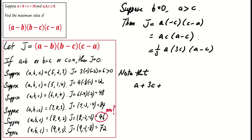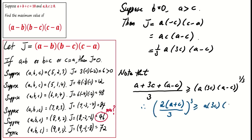By AM-GM inequality, the average of a, 3c, and (a minus c) is at least the cube root of their product. Thus, 2 over 3 times (a plus c) to the power 3 is at least a times 3c times (a minus c). This implies that J is at most 1 over 3 times (a plus c) to the power 3, approximately 98.77.